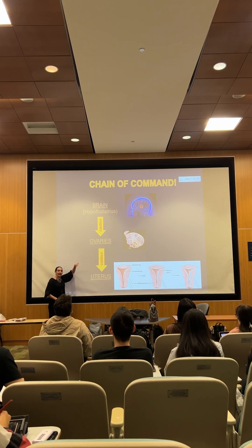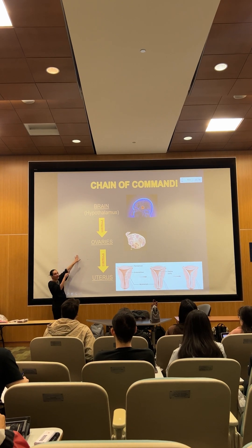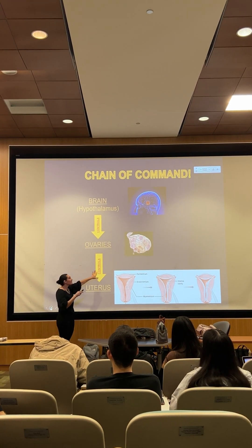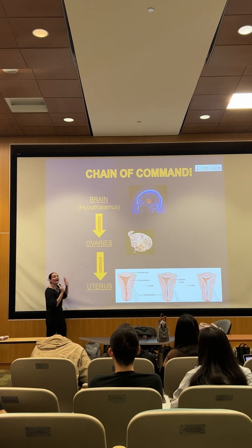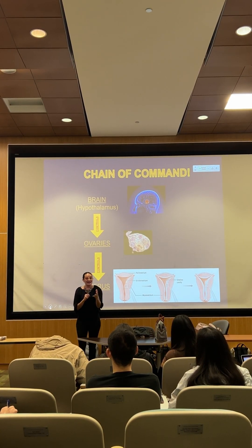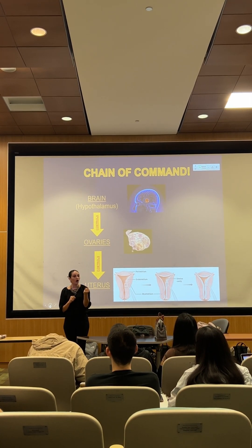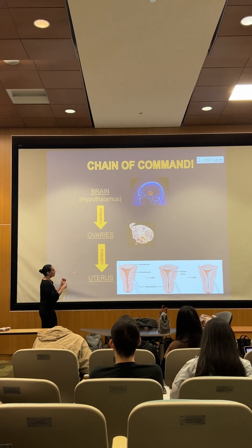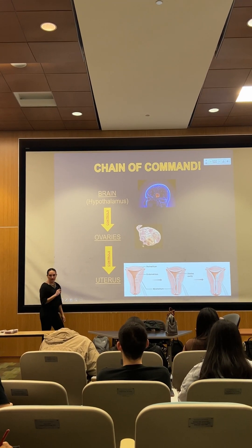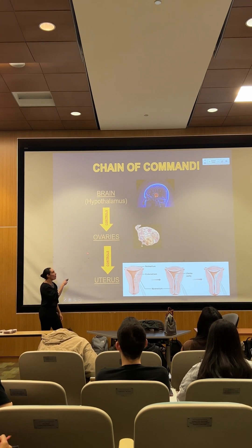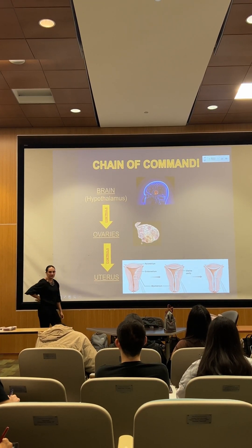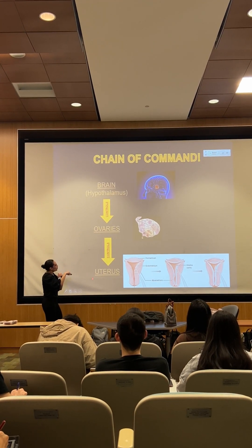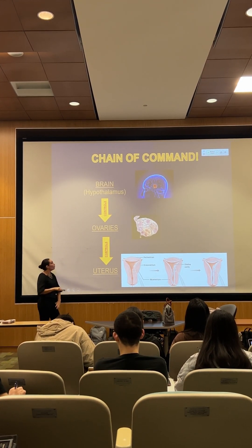It's a chain of command. The brain, the hypothalamus, will tell the pituitary gland to release hormones, and those hormones released by the pituitary gland will affect the ovary. The ovary will respond to those hormones by releasing other hormones, and those hormones released by the ovaries affect the uterus. If you remove the ovaries, would the brain be able to control the uterus? No, because it's a chain of command. Your brain controls your ovaries, not your uterus directly.